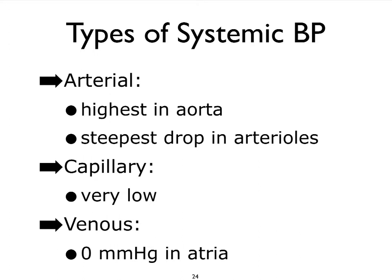Almost always when we talk about blood pressure we mean arterial blood pressure, but we also see blood pressure in the capillary beds and in the venous system. Keep in mind that by the time we get to the atria in the heart, the pressure ought to be very low — almost zero. Otherwise the blood would not be able to follow its pressure gradient and would essentially be falling into the heart with help from the superior and inferior vena cavi.